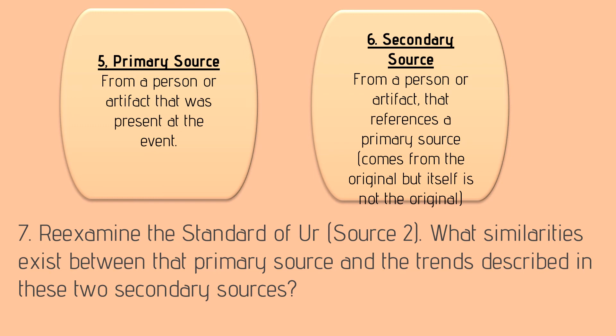I want you to jot down the definitions of primary and secondary sources — we went over them at the beginning of the year, but many students struggled, so let's refresh. A primary source comes from a person or artifact present at the event — if I was at 9/11 and saw it happen and told you about it, I'm a primary source. A secondary source references a primary source but is not the original — if I told my child and he went to school to share it, he's a secondary source. But if I gave him an artifact that was actually there, that artifact is still a primary source.